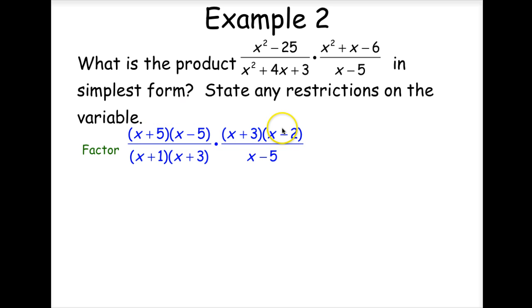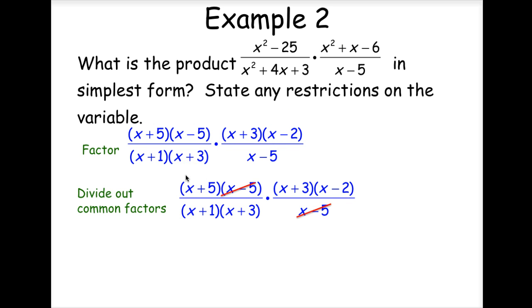First thing we need to do is factor them out. Then we're going to divide out any common factors. So we have some x minus 5's, some x plus 3's.